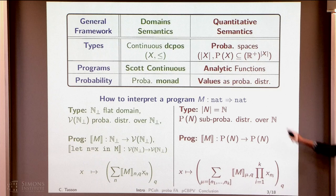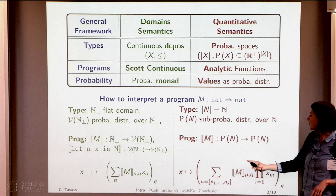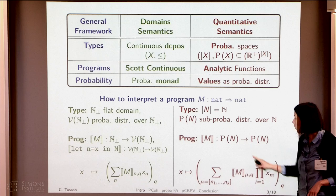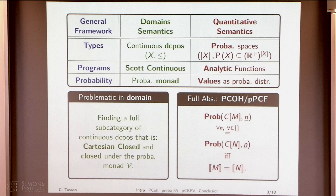Just a remark: here I say analytic functions, but these are special cases of analytic functions. The semantics of m can be written as a series which is the same all over P of n. The problem in the domain semantics is to find a full subcategory of continuous DCPOs that is both Cartesian closed and closed under the probabilistic monad V. That is a hard problem and I don't know if there is a solution.